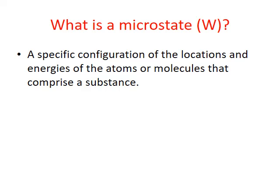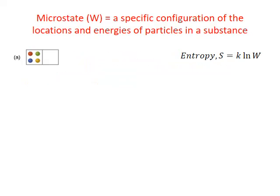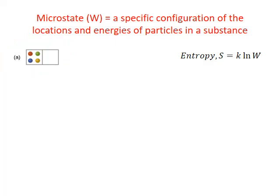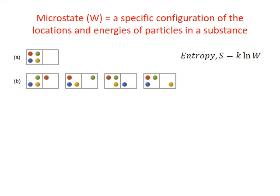Let's look at a simple visual example. Imagine two boxes connected together containing four particles — the particles have different colors simply to distinguish one from another. First, you can have all four particles in the left box and none in the right. Or you can move one particle into the right box: if it's the red particle, that's one microstate; the green particle, a different microstate; the blue particle, another; and the yellow particle, a fourth microstate.